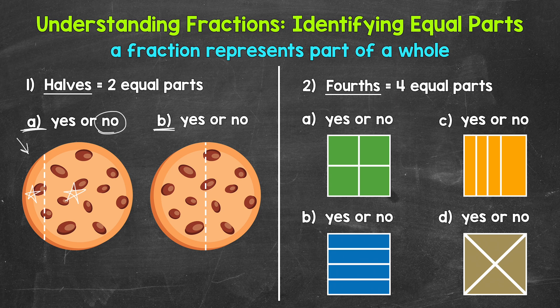How about cookie B? Do we have halves, two equal parts? Yes, we do have halves here. This would be a fair split. Each part here is one half of the whole cookie, and those two halves make the whole. So keep in mind, when working with fractions, we need equal parts — parts that are the same size.